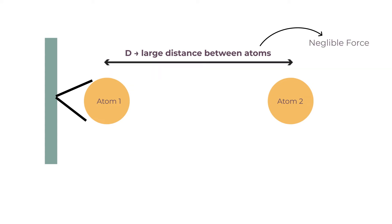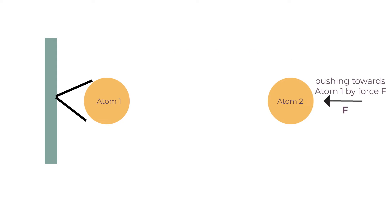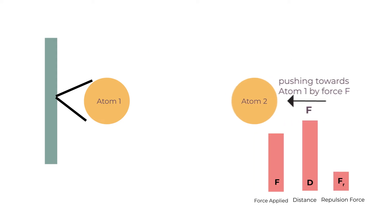Since these atoms are far away, there is no force acting between them. As we start bringing the free atom near to the fixed atom by applying force, due to electrons present at the periphery of the atoms, these atoms start repelling each other.